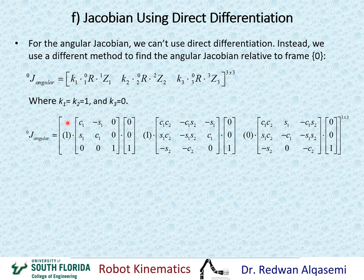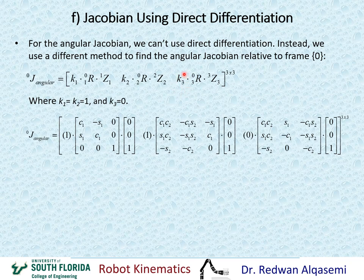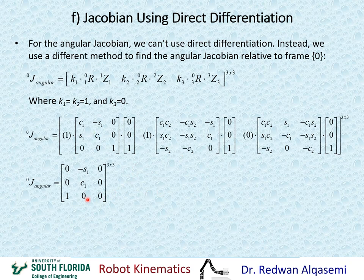Plugging in the values: K1 equals 1 for the revolute joint, R0,1 is taken from T0,1, and Z1,1 is always 0, 0, 1. For the second column, K2 equals 1, R0,2 is from T0,2, and Z2,2 is always 0, 0, 1. For the third column, since joint 3 is prismatic, K3 equals 0, so it is multiplied by R0,3 from T0,3 and Z3,3 is always 0, 0, 1. Performing these multiplications yields the 3x3 angular Jacobian in reference to frame 0.